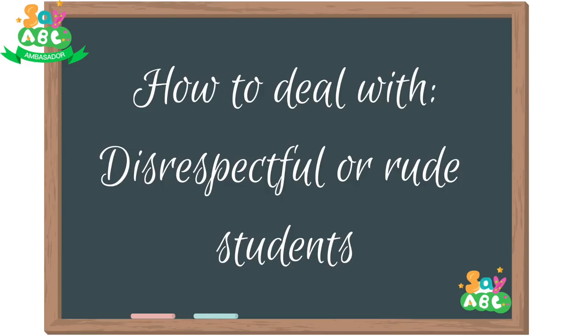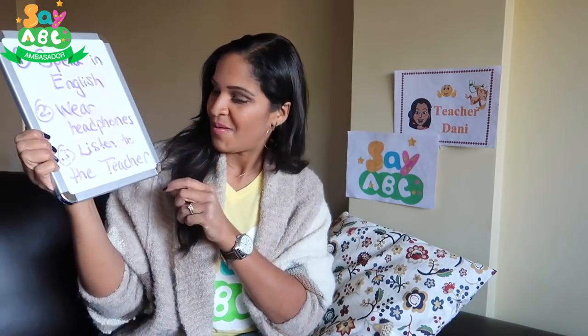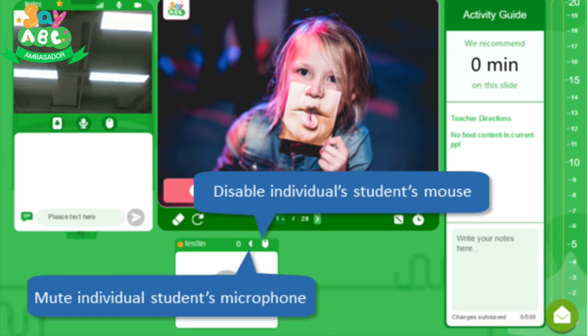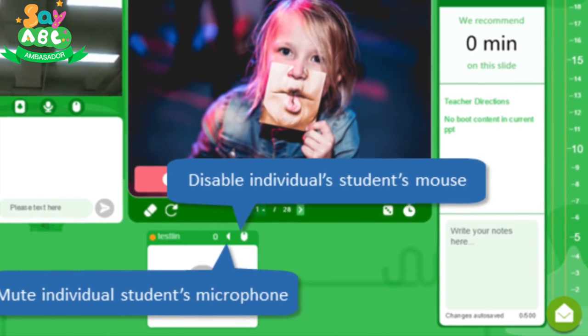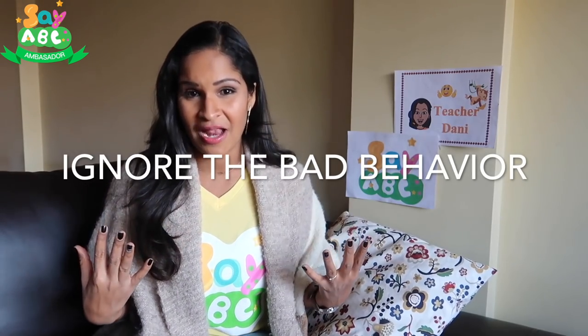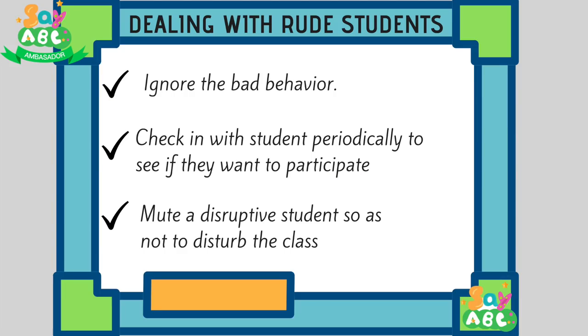However, sometimes there are students who are just being bad and disrespectful, and that is not acceptable in the classroom. Remember rule number three: listen to the teacher. What I've found is that the more I react to a rude, disrespectful student, the more they act out — so it backfires on me. If they are not responding or are disrupting the class, thank goodness Say ABC has the mute function. You can put them on mute and ignore that behavior. Usually they're just trying to get a reaction out of the teacher or their classmates, and if no one's paying attention to them, they usually calm down.